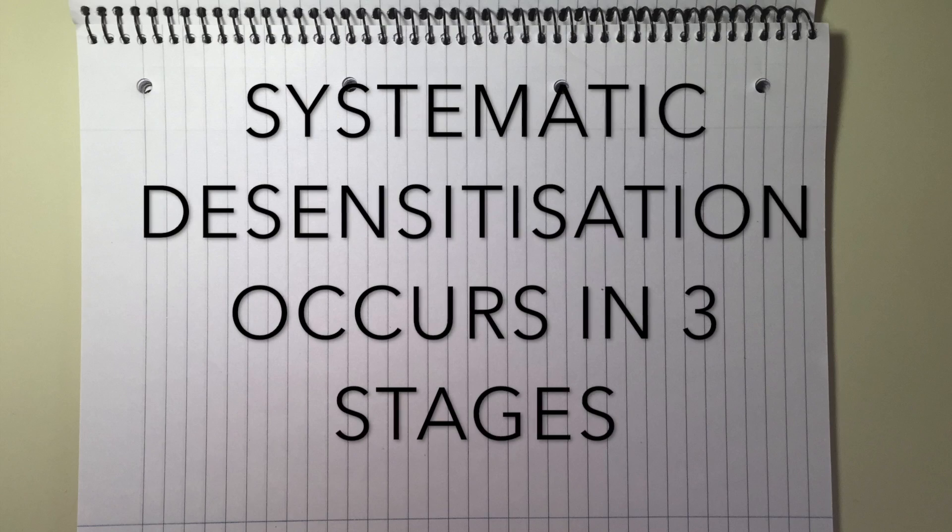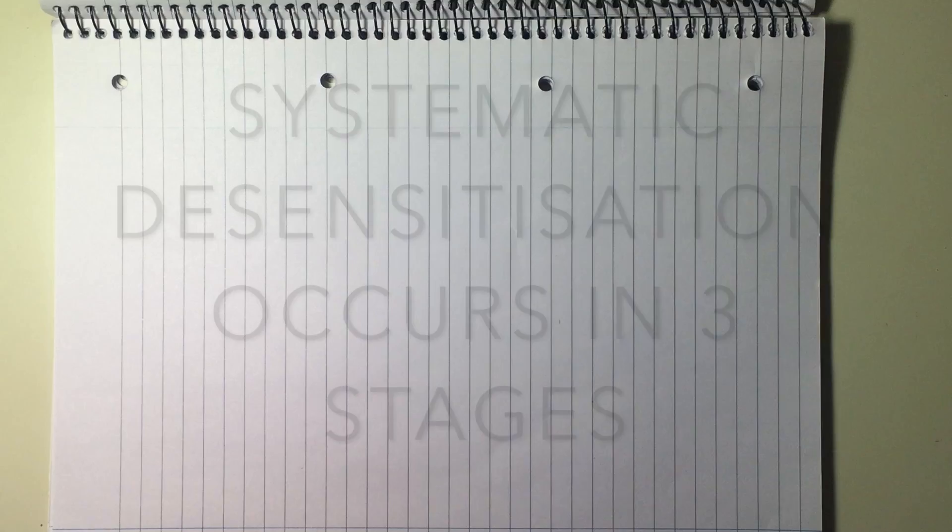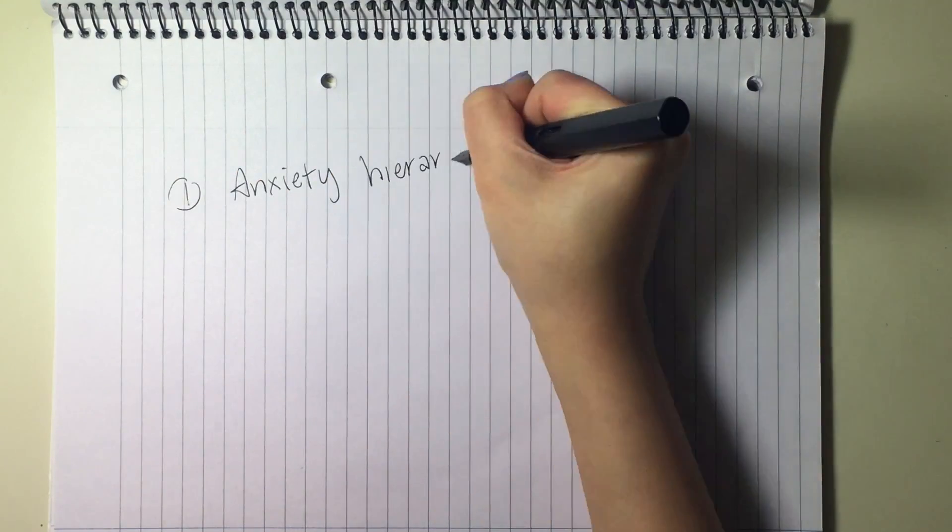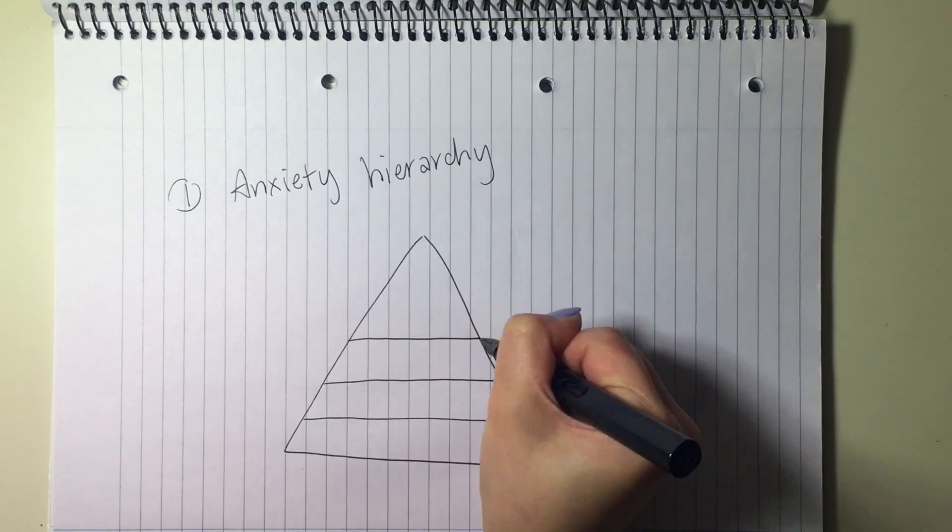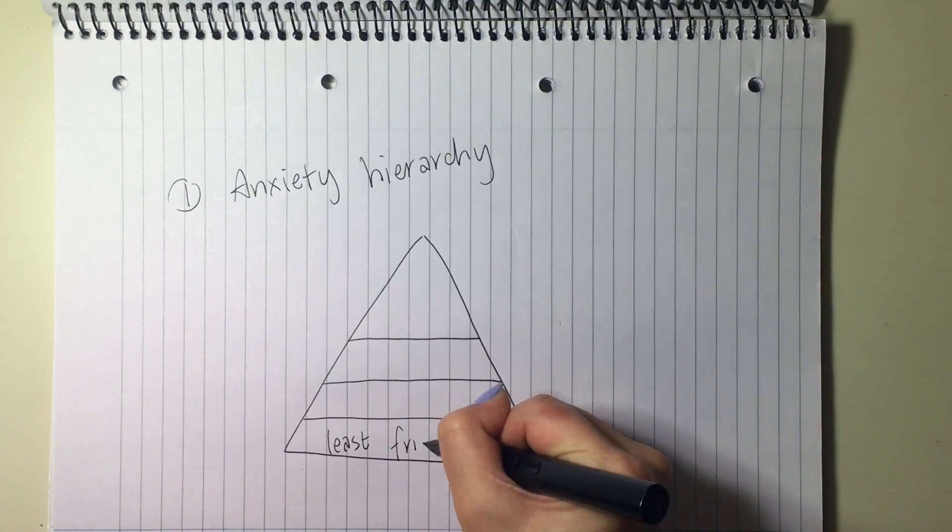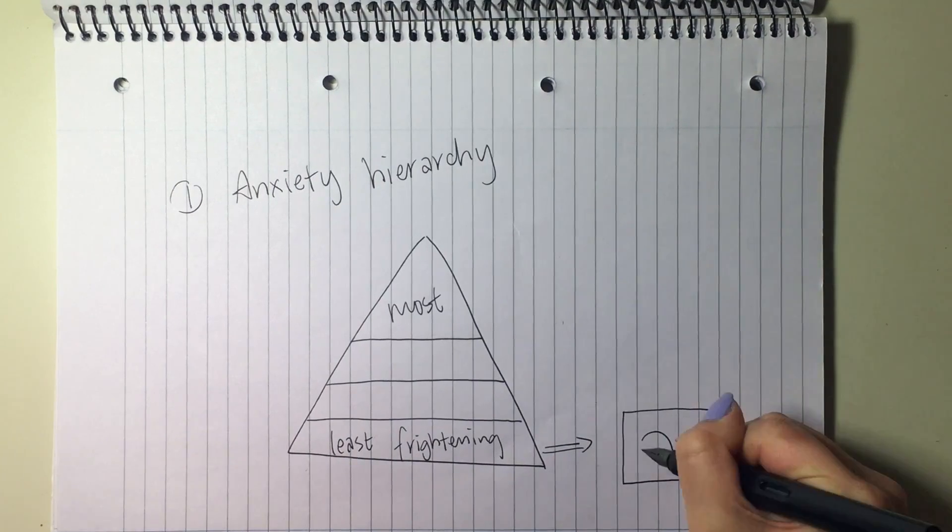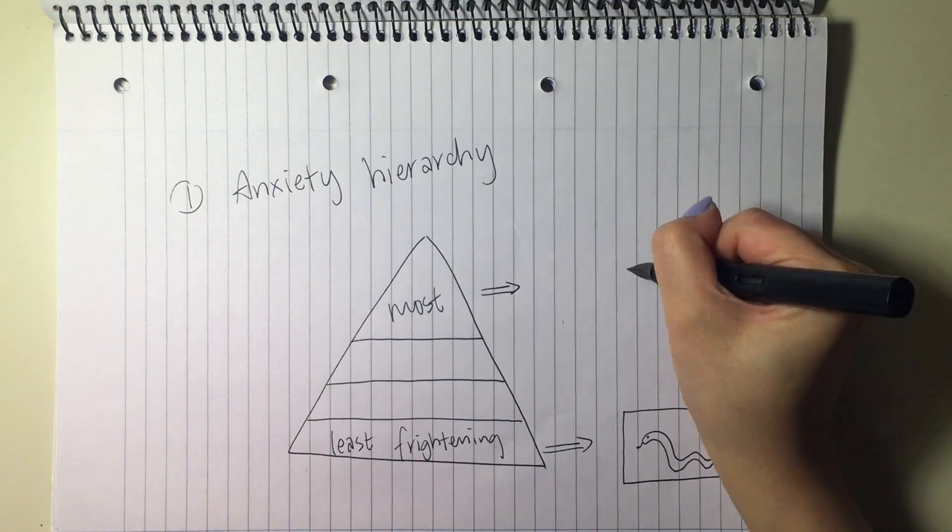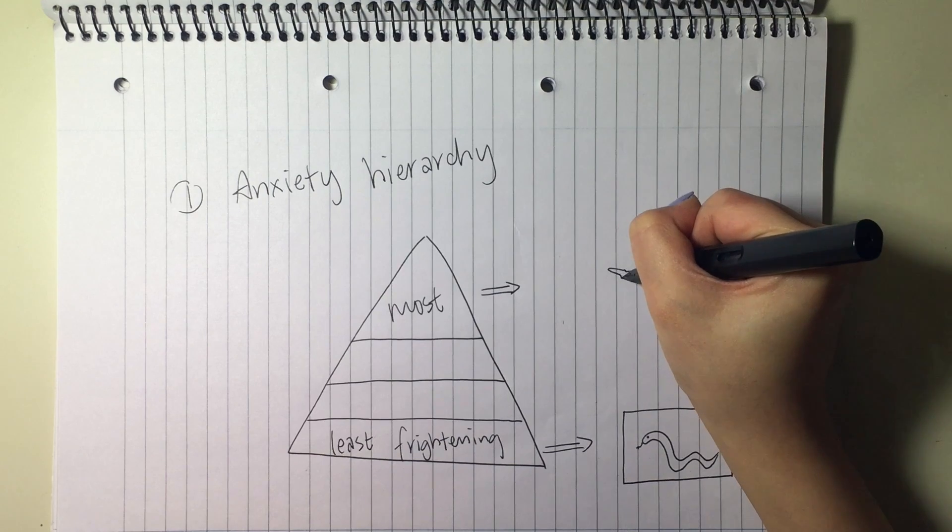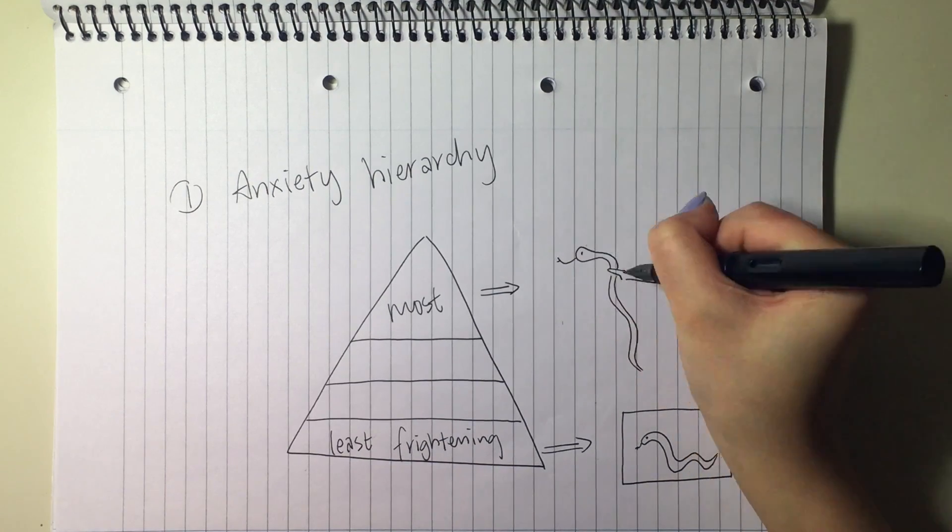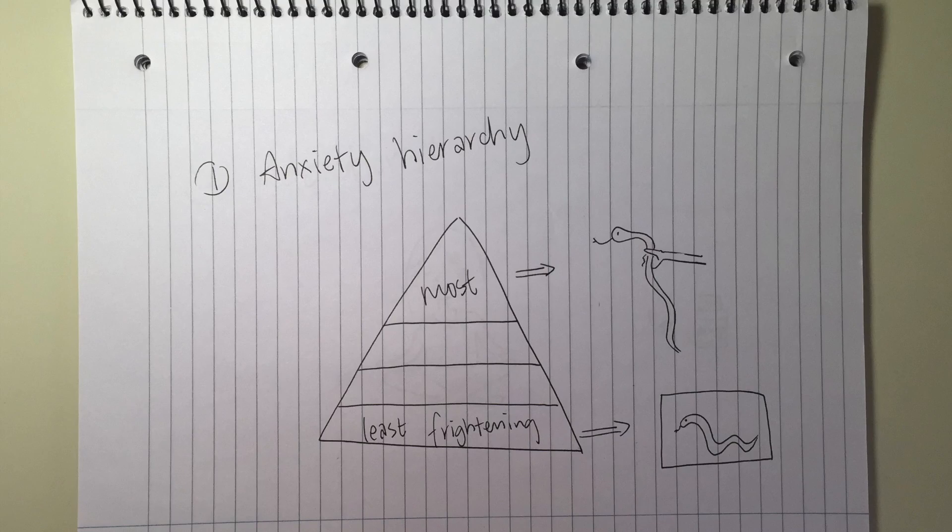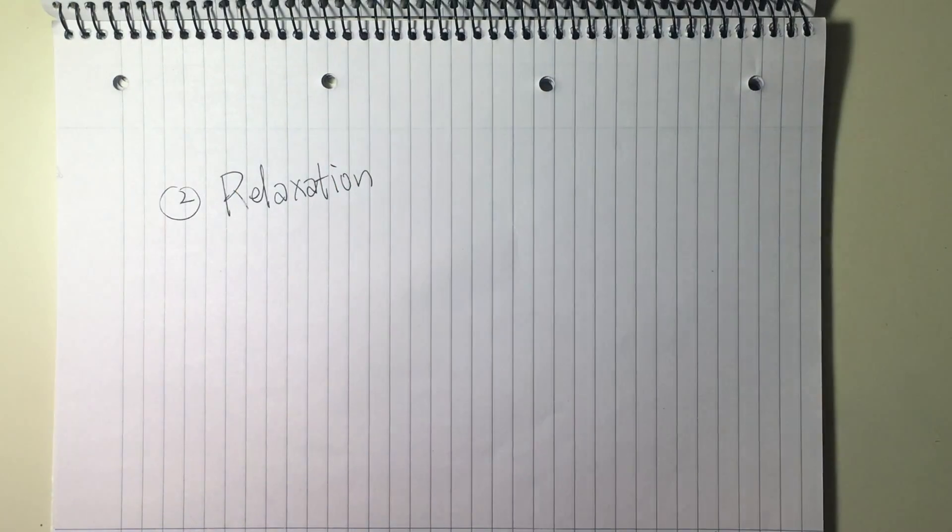Systematic desensitization occurs in three stages. The anxiety hierarchy is put together by the patient and the therapist. This is a list of situations related to the phobic stimulus that provoke anxiety, arranged in order from least to most frightening. For example, a snake phobic might identify seeing a picture of a small snake as low on their anxiety hierarchy and holding a snake at the top of the hierarchy.